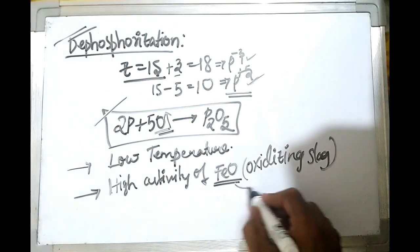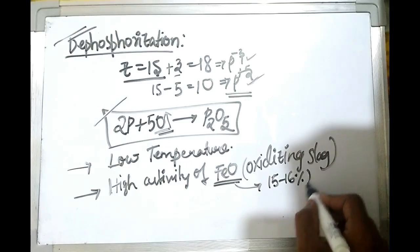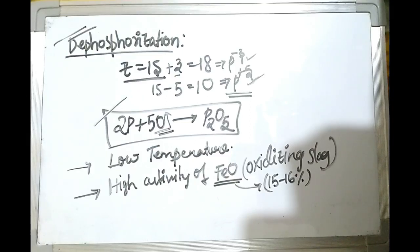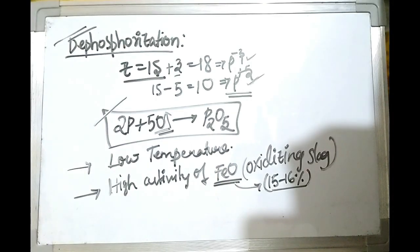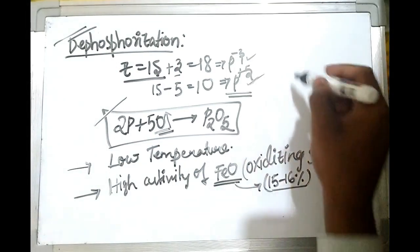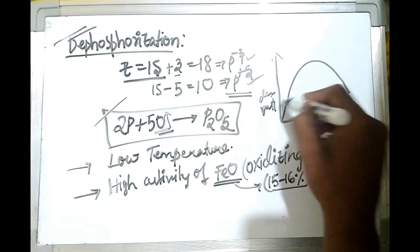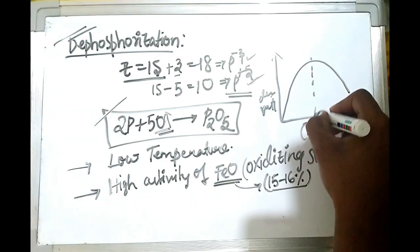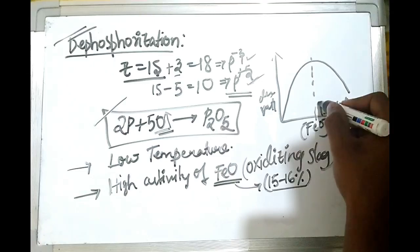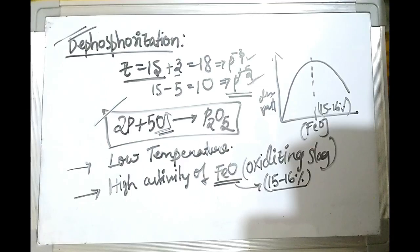For efficient dephosphorization, the FeO content in the slag should be around 15 to 16%. The dephosphorization ratio increases with increasing FeO content, reaches a maximum at 15–16%, and then decreases. The dephosphorization ratio is defined as the amount of phosphorus present in the slag divided by the amount of phosphorus present in the final hot metal.